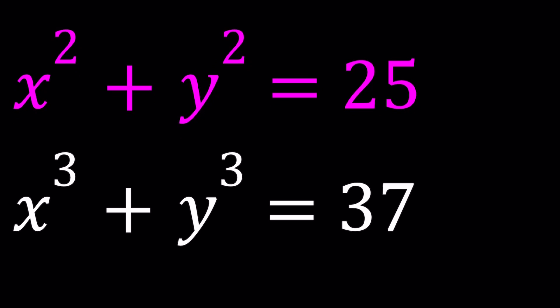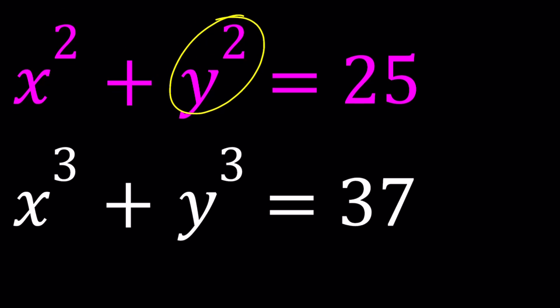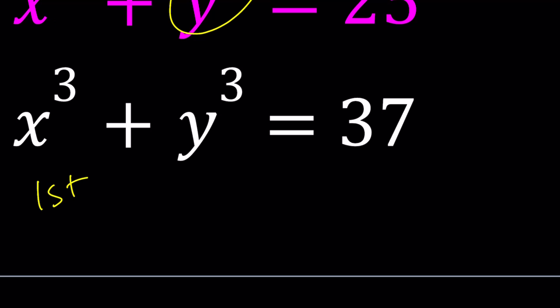We have x squared plus y squared equals 25 and x cubed plus y cubed is equal to 37. And we're going to be solving for x and y values. You probably guessed the solution. Anyway let's hold on to it because we're going to try to solve this problem in the general case. I'll be presenting two methods.